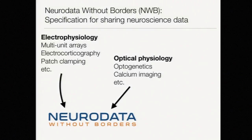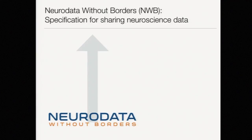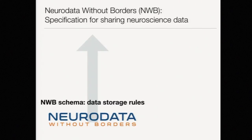Just to explain what Neural Data Without Borders is — it's a data standard that's trying to unify data format across labs that are collecting electrophysiology and optical physiology data. I think of it as a hierarchy where at the bottom you have data storage rules. If you store local field potential data, you have to also store the sampling rate and the units of that data, and what electrodes recorded that data. And if you store electrodes, you have to store the positions of those electrodes. You end up with this kind of data dependency tree.